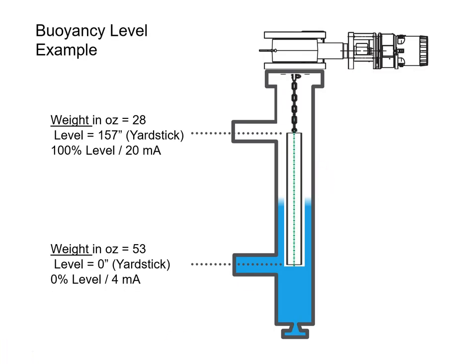With buoyancy, it's the same concept as DP level. The instrument measures the buoyant force or weight of a displacer — we're actually measuring the force or weight and we're inferring the level off of the force or weight of this displacer. In this example, when we see the displacer is lightest at 28 ounces, we have a level of 157 inches. At the lower level, we're set up to measure 53 ounces, which converts to 0 inches.